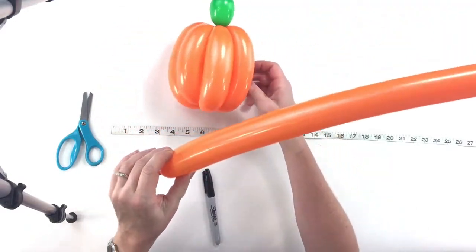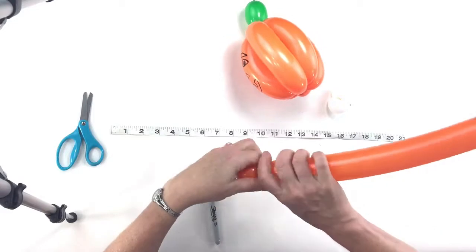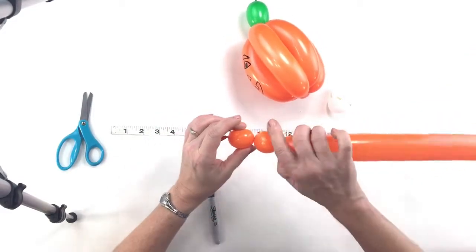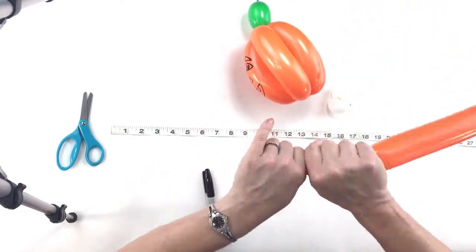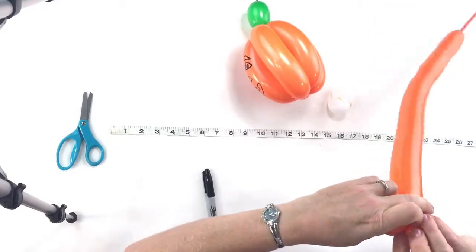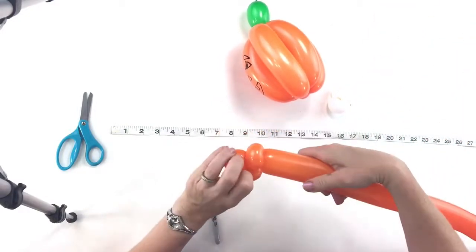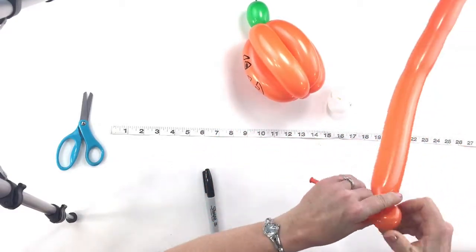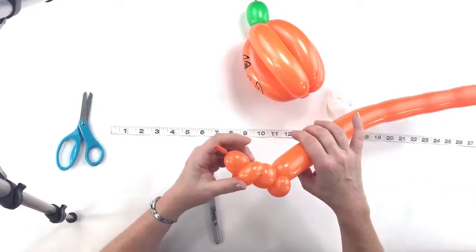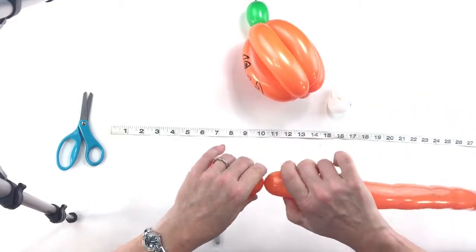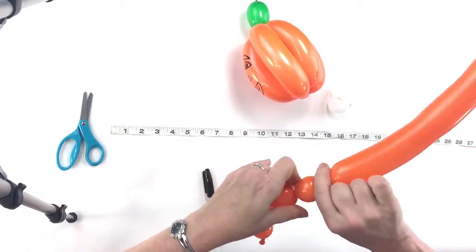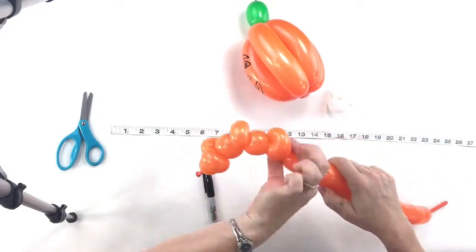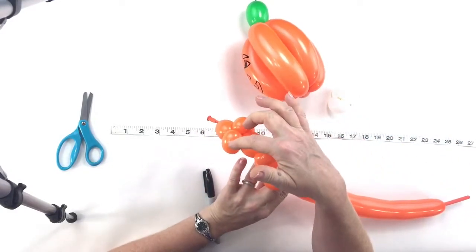And then another way I really like to do it is by taking this other orange 260 and making a little one inch bubble. And then two one inch bubbles, cherry tomato size, and pinch twist them. These will be the eyebrows. Pinch twist those. And make another one inch bubble and then another one inch bubble and pinch twist that. That will be the nose. And then another one inch bubble.